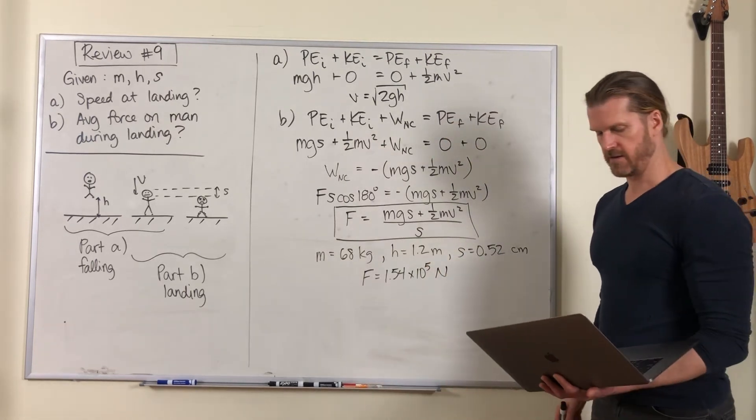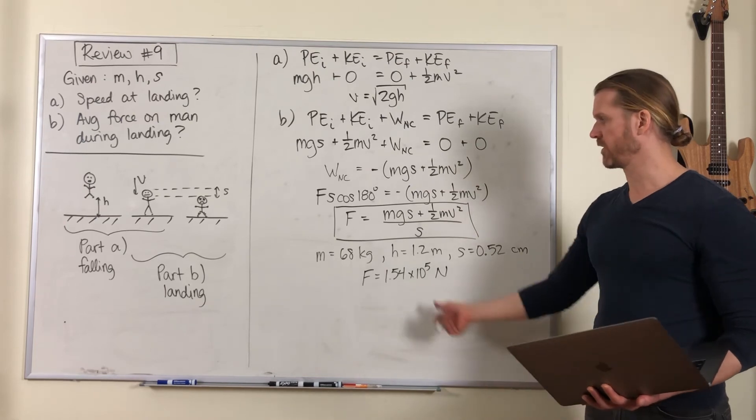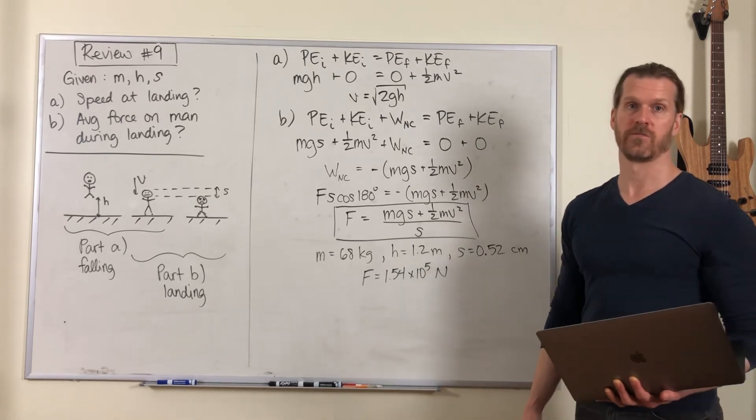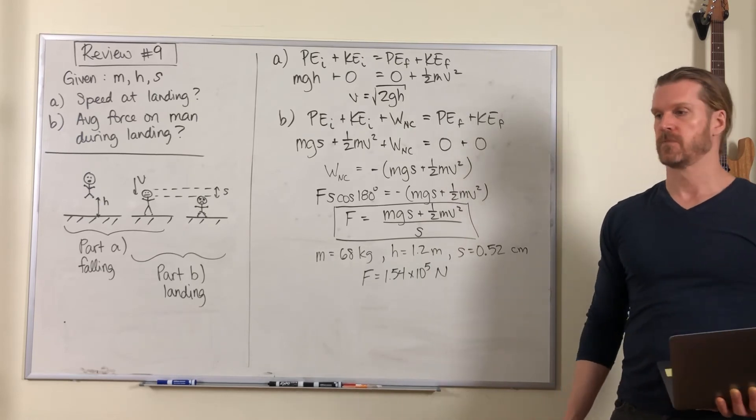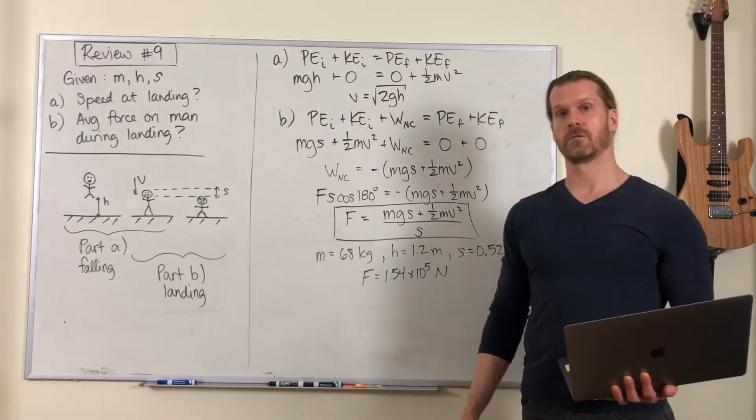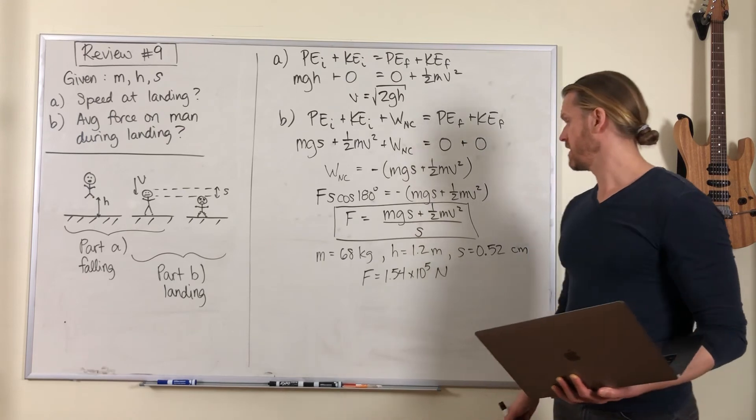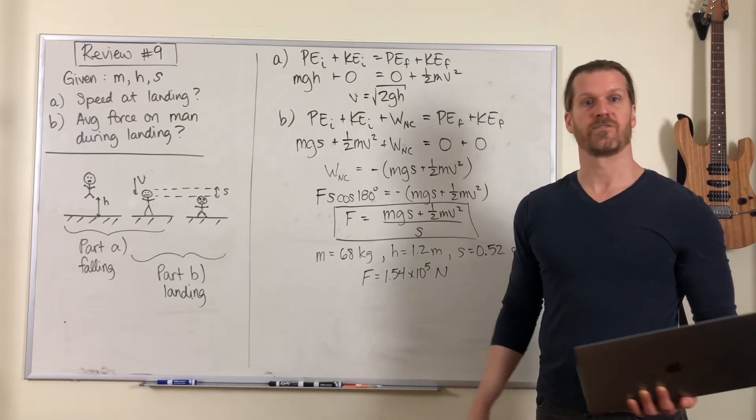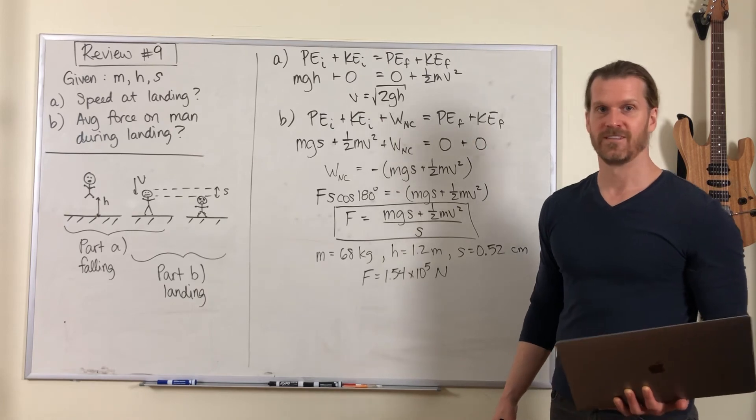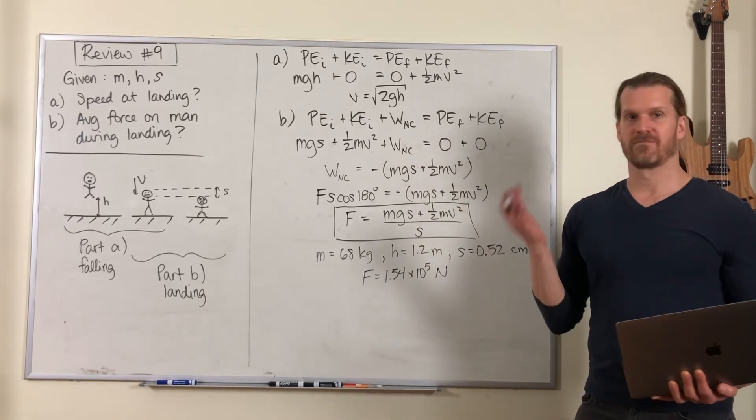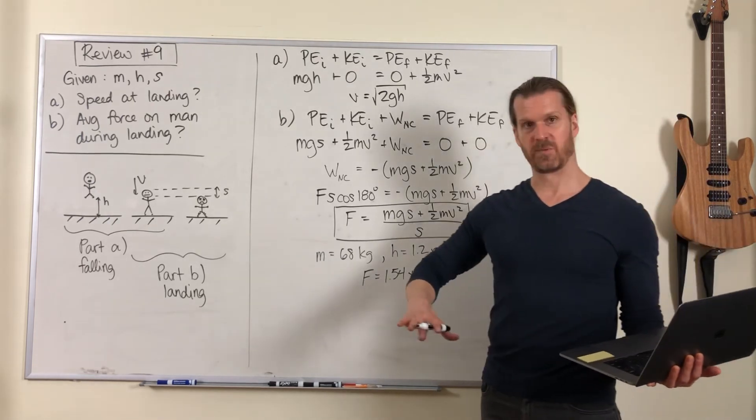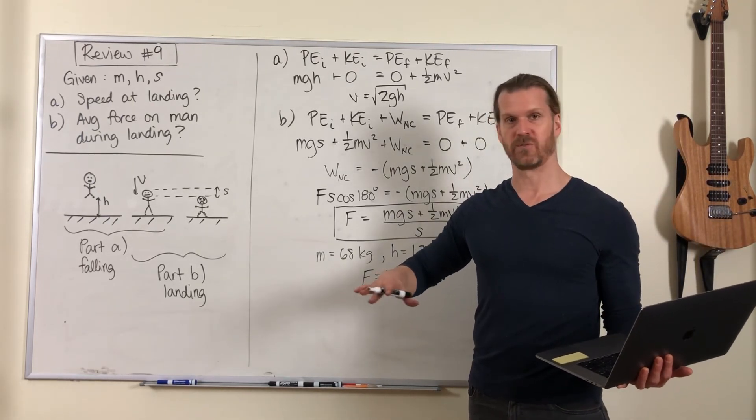In one of our recent lessons we were talking about the threshold of forces for injuries, I think it was when we were talking about automobile collisions. This amount of force is enough to break bones, even though he didn't jump from very high, only maybe this high above the ground, 1.2 meters.